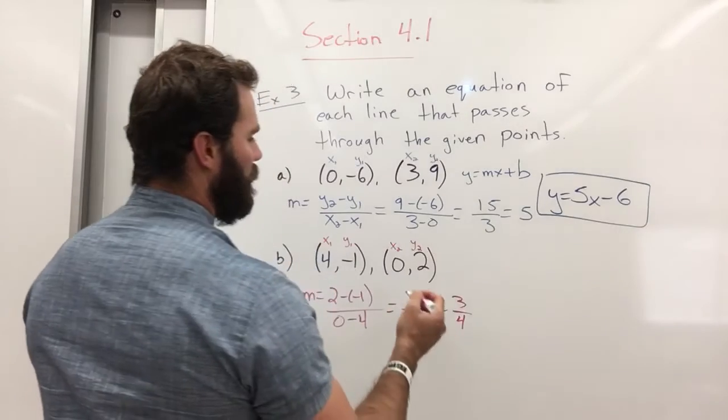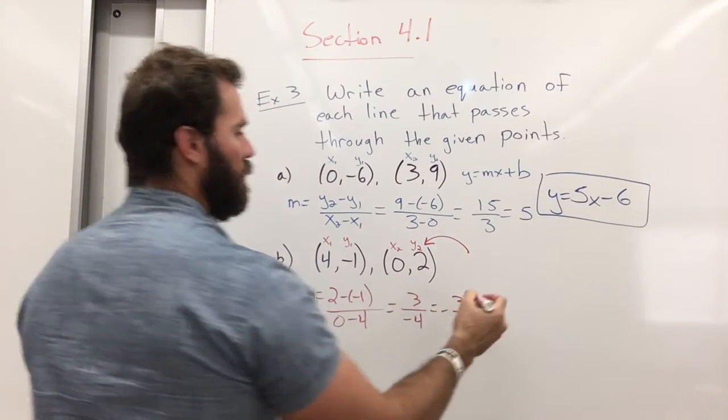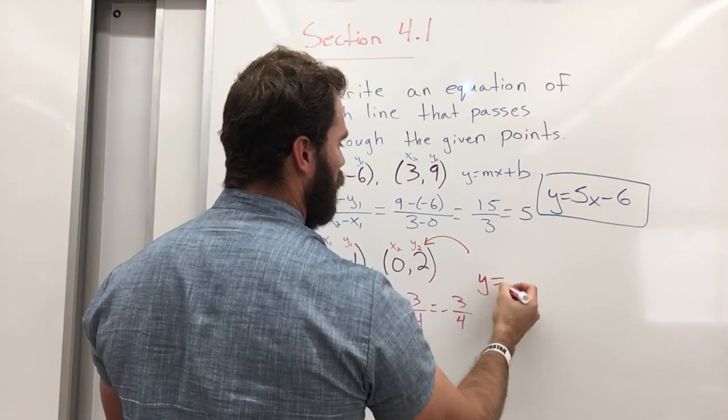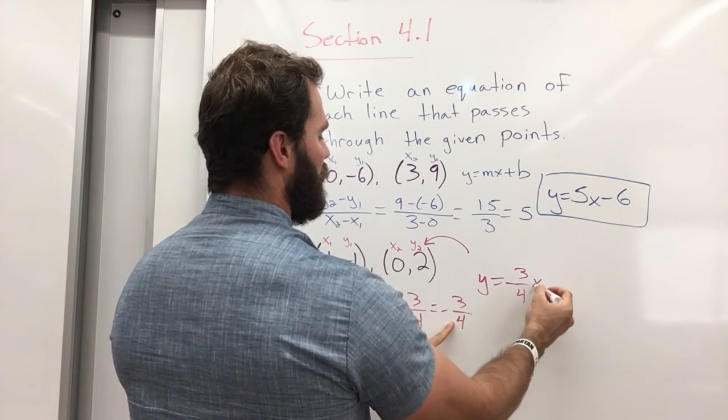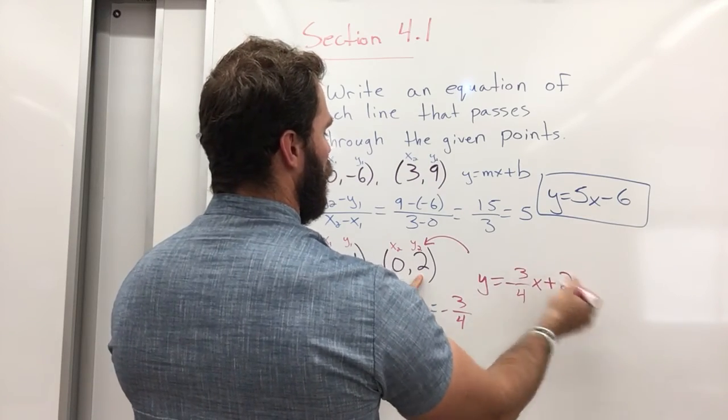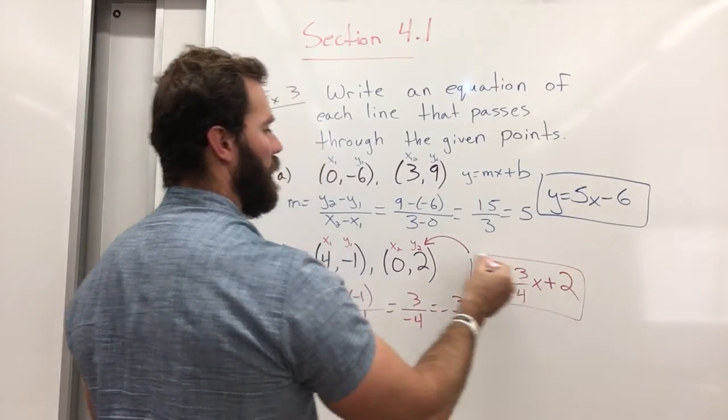And my y-intercept, right here. x is 0, y is 2. So my equation is going to be y equals m, which is negative 3 over 4, x plus b, which is my y-intercept, 2. And there's my answer.